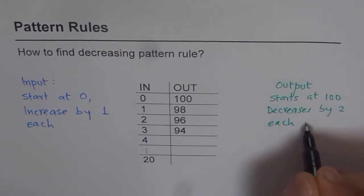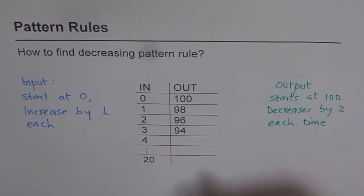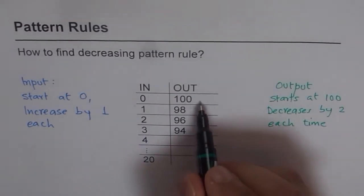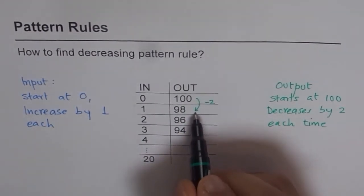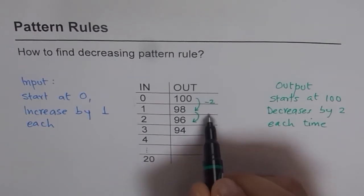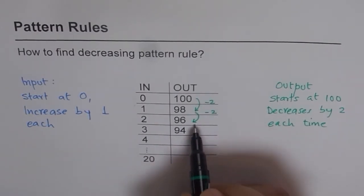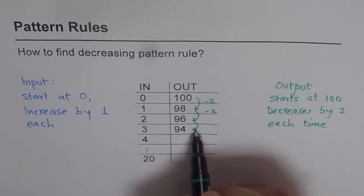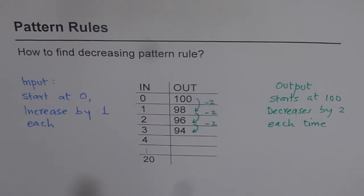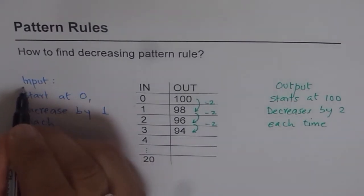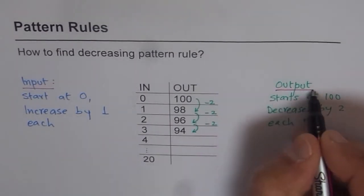As you can see, if you go from 100 to 98, it is minus 2. And then again if you go from 98 to 96, it is again minus 2. So this pattern repeats. In a way, it is minus 2 each time. So that way you can separately describe what is your input pattern and what is your output pattern.